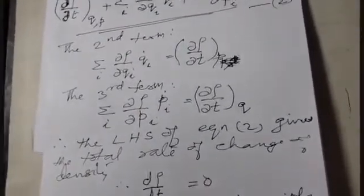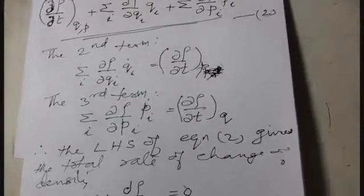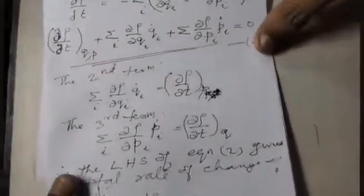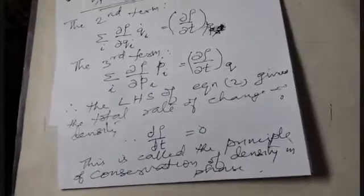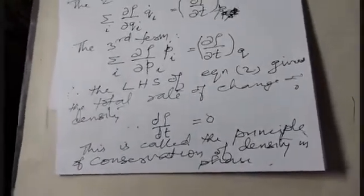The second term, sigma over i of d(rho)/dqi times qi-dot, equals d(rho)/dt for constant p, and the third term, sigma over i of d(rho)/dpi times pi-dot, equals d(rho)/dt for constant q. The left-hand side gives the total rate of change of density d(rho)/dt equals zero. This is called the principle of conservation of density in phase space.